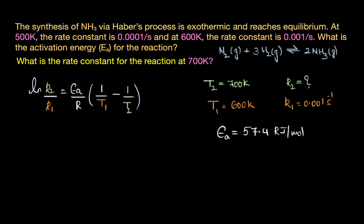We know that at T1 equals 600 Kelvins, K1 is already given to us. T2 is 700 Kelvins for which we need to figure out the K2 value, and activation energy we already found as 57.4 kilojoules per mole.